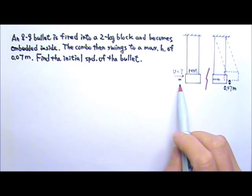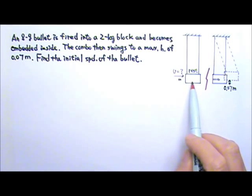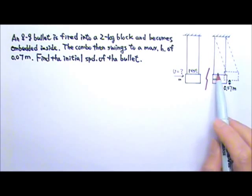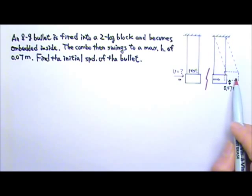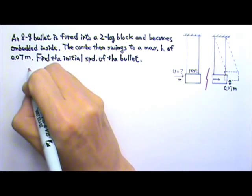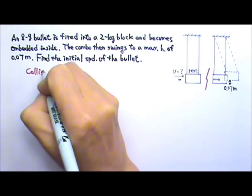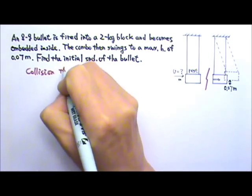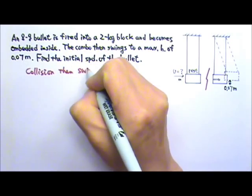This problem has two parts. At first, there is a collision between the bullet and the block, and then the combo swings up high. So there is the collision, and then there is the swinging part.